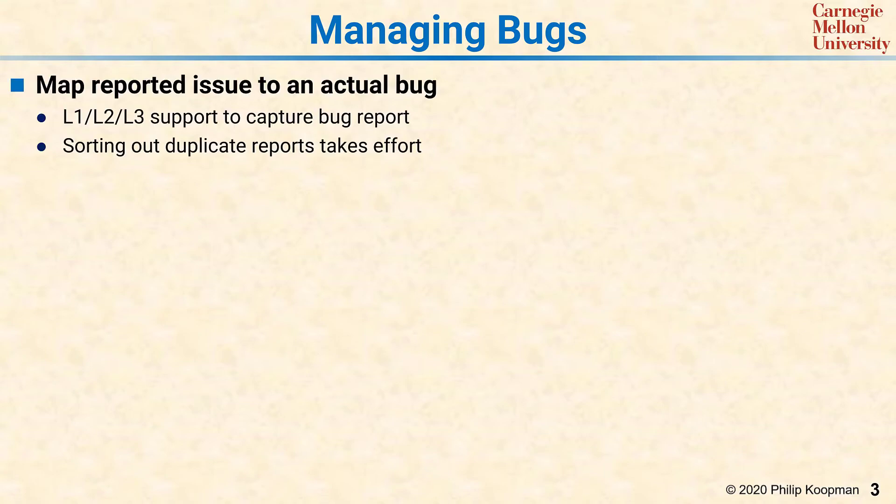The most obvious activity associated with software maintenance is fixing bugs, so let's start there. Bug reports don't show up fully formed — somebody has to notice there's a problem, and that bug has to be reported. Once the software is released, those bug reports come in through a support organization.